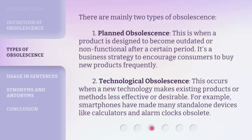There are mainly two types of obsolescence. First, Planned Obsolescence: this is when a product is designed to become outdated or non-functional after a certain period. It's a business strategy to encourage consumers to buy new products frequently. Second, Technological Obsolescence: this occurs when a new technology makes existing products or methods less effective or desirable. For example, smartphones have made many standalone devices like calculators and alarm clocks obsolete.